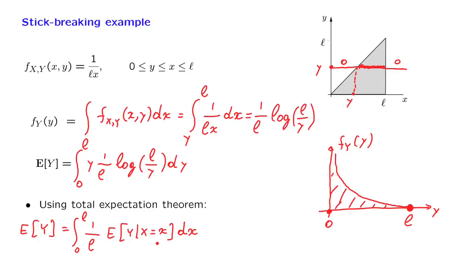Why is this simpler? When we condition on X, taking a specific value, Y has a uniform distribution between 0 and X. And therefore, this conditional expectation is the expectation of a uniform, which is 1 half the range of that uniform. So we obtain the integral from 0 to L, 1 over L, times x over 2, dx.